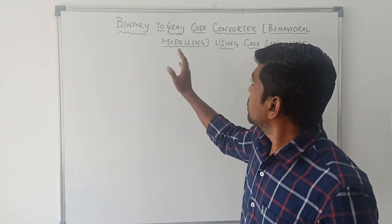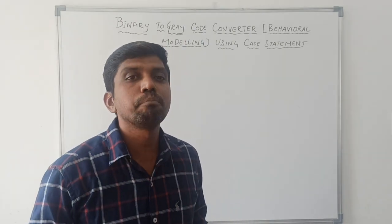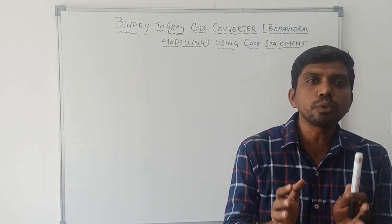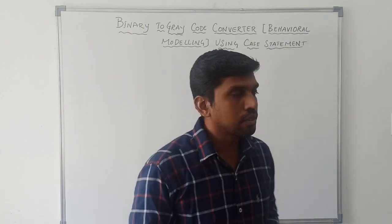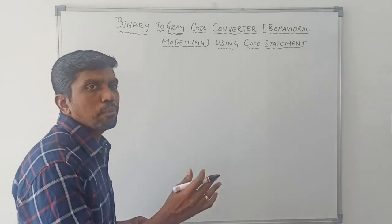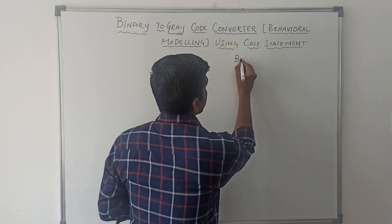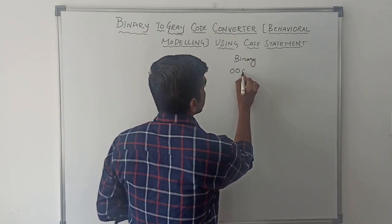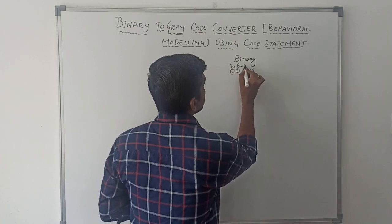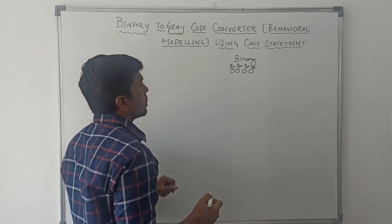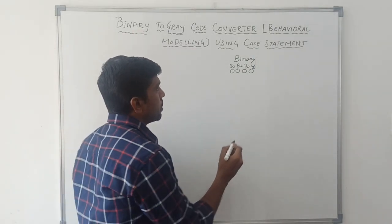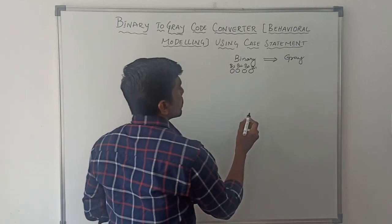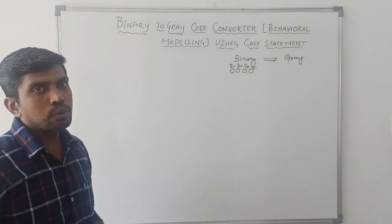Today I am going to discuss binary to gray code converter. This program comes under behavioral model using case statement. Before I start to write the program, first I record the terms — how to convert binary numbers into gray numbers. In this program I am taking 4 bits of binary numbers.